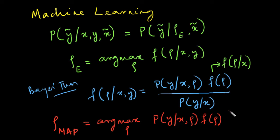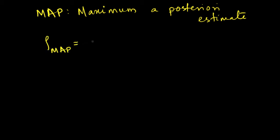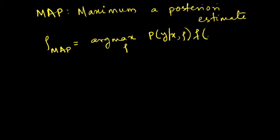How MAP avoids overfitting and what kind of f of rho you can choose for avoiding overfitting — we are going to see that in future videos when we discuss specific machine learning models. Here we are only concerned with the general mathematical framework of the maximum a posteriori estimate. So our MAP, which is the maximum a posteriori estimate, has rho_MAP equal to argmax over rho of the probability of output given input and parameters, times the distribution of rho.